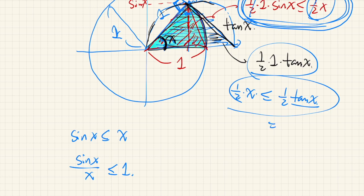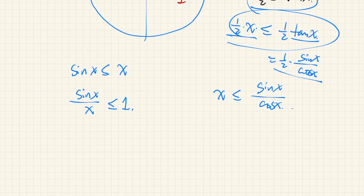Tangent x is, by definition, sin x over cosine x. If we compare these signs, we have x less than or equal to sin x over cosine x. Let's multiply both sides by cosine x and divide both sides by x. We have cosine x is less than or equal to sin x over x.